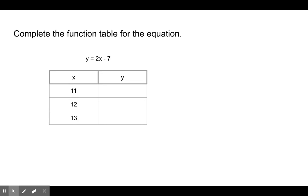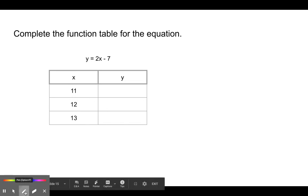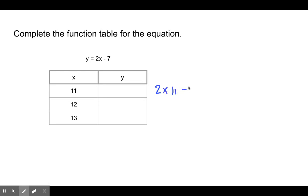Okay, so welcome back. We have 11 here is our first one. And remember, when we have x is 11 and we're substituting in, that's 2 times 11 minus 7. And then 2 times 11 is 22 minus 7. That equals 15.